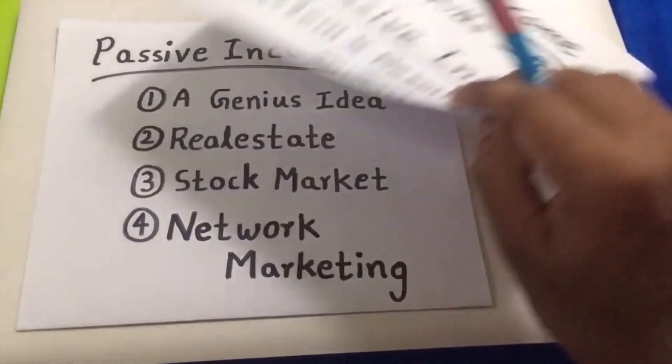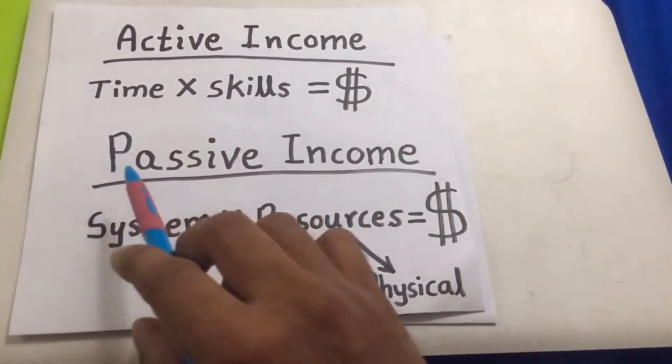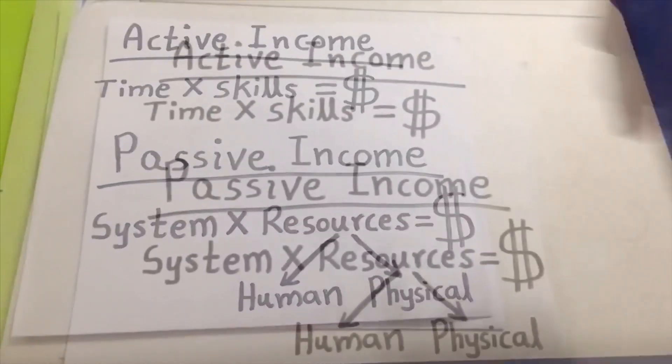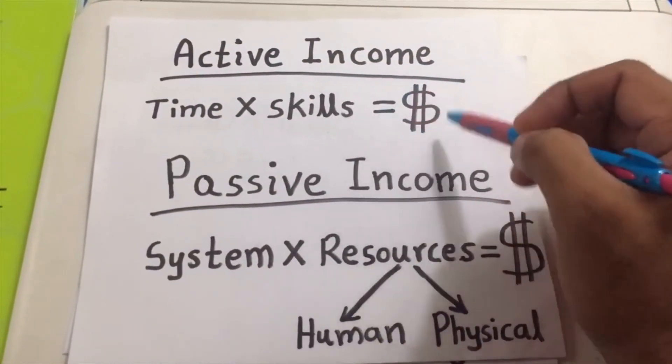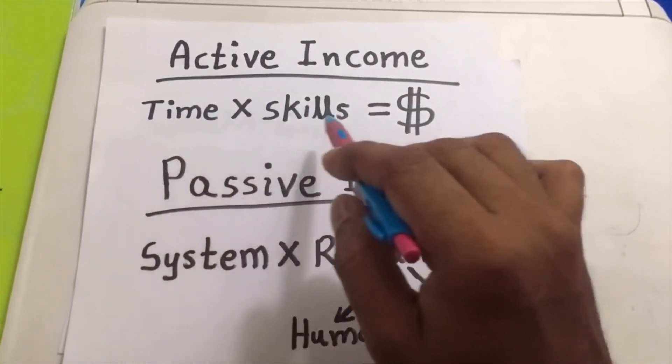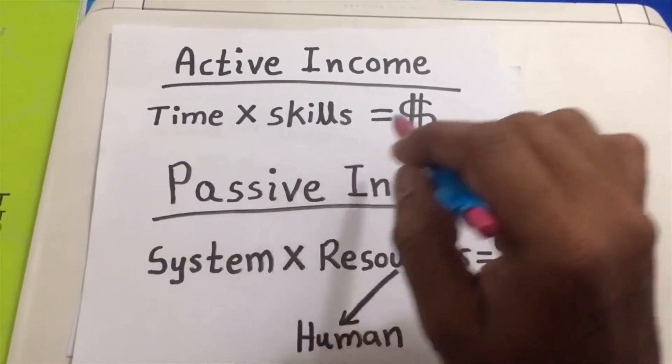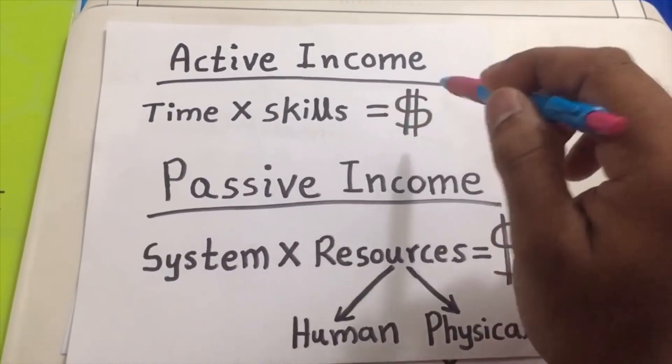Before that, let me explain what is an active income and what is a passive income. An active income is an income where you earn by directly exchanging your time and skills. For the time you spend and the skills you have, you are getting a salary. So basically this is a job.